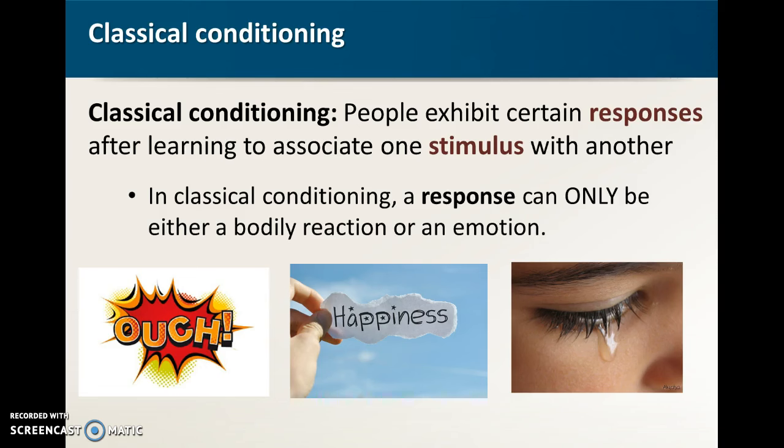So you can feel pain, feel happy, cry, sneeze, blink, have your heart rate go up, feel tense. Anything like that can be a response but anything that you then do voluntarily like if you run away from something or you hit a person now we're also getting into operant conditioning because that's a voluntary action that you initiate. Okay so we've got a stimulus that can be pretty much anything. A response can be a bodily reaction or an emotion.